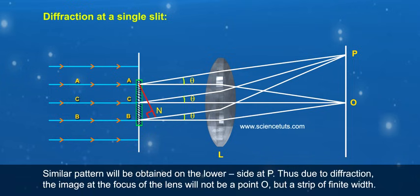A similar pattern will be obtained on the lower side at P. Thus due to diffraction, the image at the focus of the lens will not be a point O, but a strip of finite width.